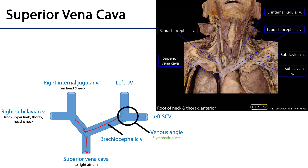The left brachiocephalic vein is longer and more oblique than the right brachiocephalic vein. On the cadaveric image we can see the superior vena cava and a very long oblique left brachiocephalic vein crossing over the superior mediastinum. These brachiocephalic veins are formed by the confluence of internal jugular veins with subclavian veins — wherever the IJV returning blood from the head and neck meets the subclavian veins returning blood from the upper limb, thorax, and head and neck, the brachiocephalic vein is formed.